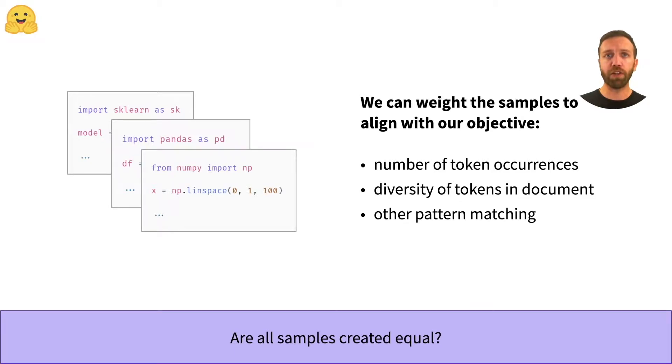But there are scenarios where it could make sense to weight the samples differently. If, for example, one sample contains a lot of tokens that are of interest to us, or if a sample has a favorable diversity of tokens, we can also implement other heuristics with pattern matching or other rules.